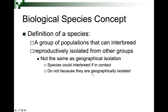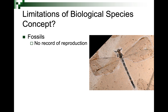But there are limitations to the biological species concept. What do you do with fossils? This fossil dragonfly is as good as any dragonfly I could capture in the wild today — the morphology and anatomy are exceptional — but I can't prove it's a new species because I can't get a fossil to breed with another fossil. There's no record of reproduction.